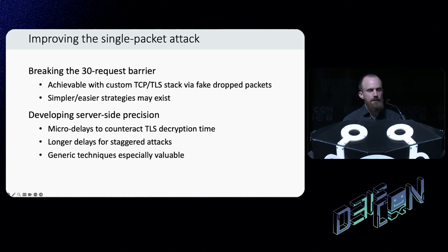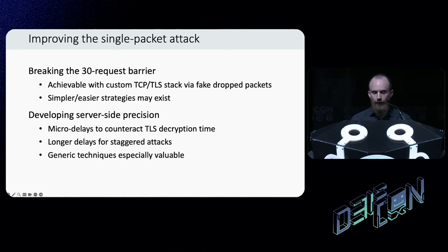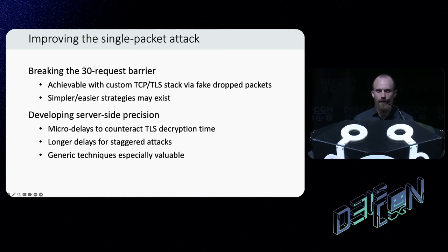The final area for research is improving the single packet attack. My implementation lets you get about 20 to 30 requests into one packet — if you get more than that, the operating system just puts them in another packet shortly later. I'm certain you can fit a lot more requests into a single packet with enough effort — you can totally do it with a custom TCP or TLS stack, and there may be other easier ways I didn't think of. I didn't push that side of the research that far because 20 requests is enough to cause a lot of damage in the wild by itself. Other valuable work on that angle is finding other ways of causing server-side delays, which will let you trigger staggered attacks more reliably and also help with the timing attack side.